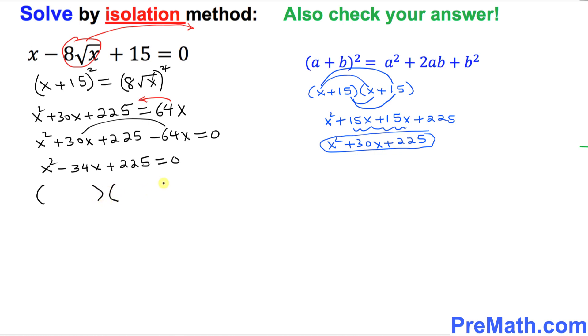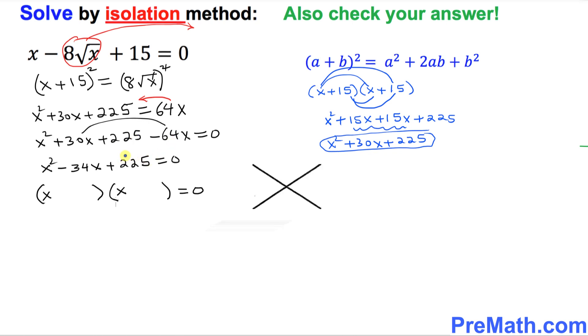I want you to put down two parentheses equal to 0. So I want you to put down x right up here and x right up here. And in the next step, I want you to write down this positive 225 on the top of this x factor. And negative 34, which is in the middle, should go at the bottom.